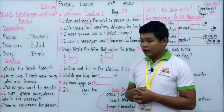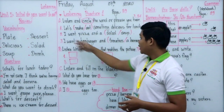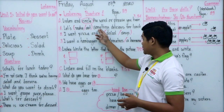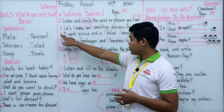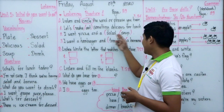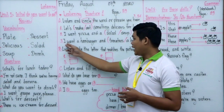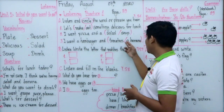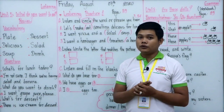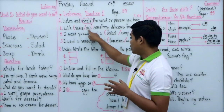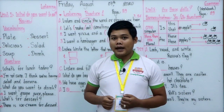When you listen you will get all the correct answers. Sentence one: 'Let's make or eat something delicious for lunch.' Sentence two: 'I want pizza, or a salad, or soup.' Sentence three: 'I want a hamburger and tomato, or a banana.' Each sentence has two choices — just listen and choose one of two options for each sentence. Are you ready? Now listen.